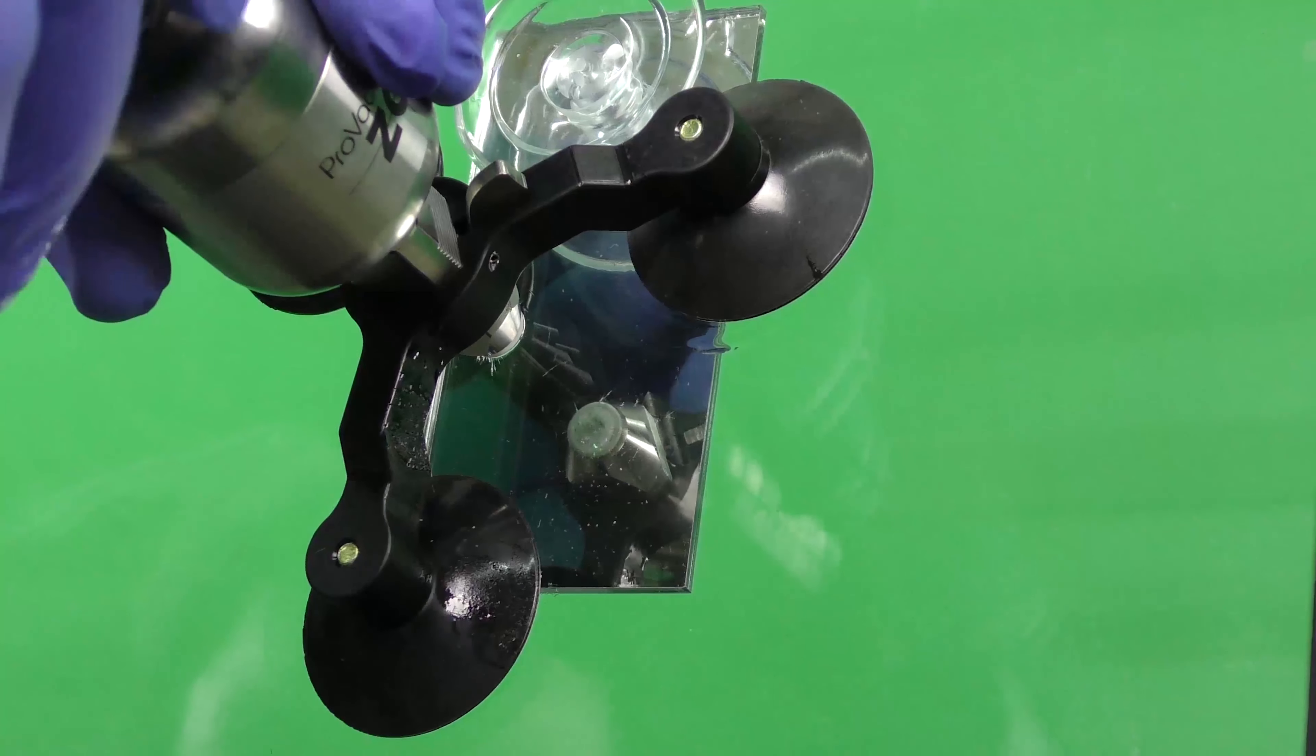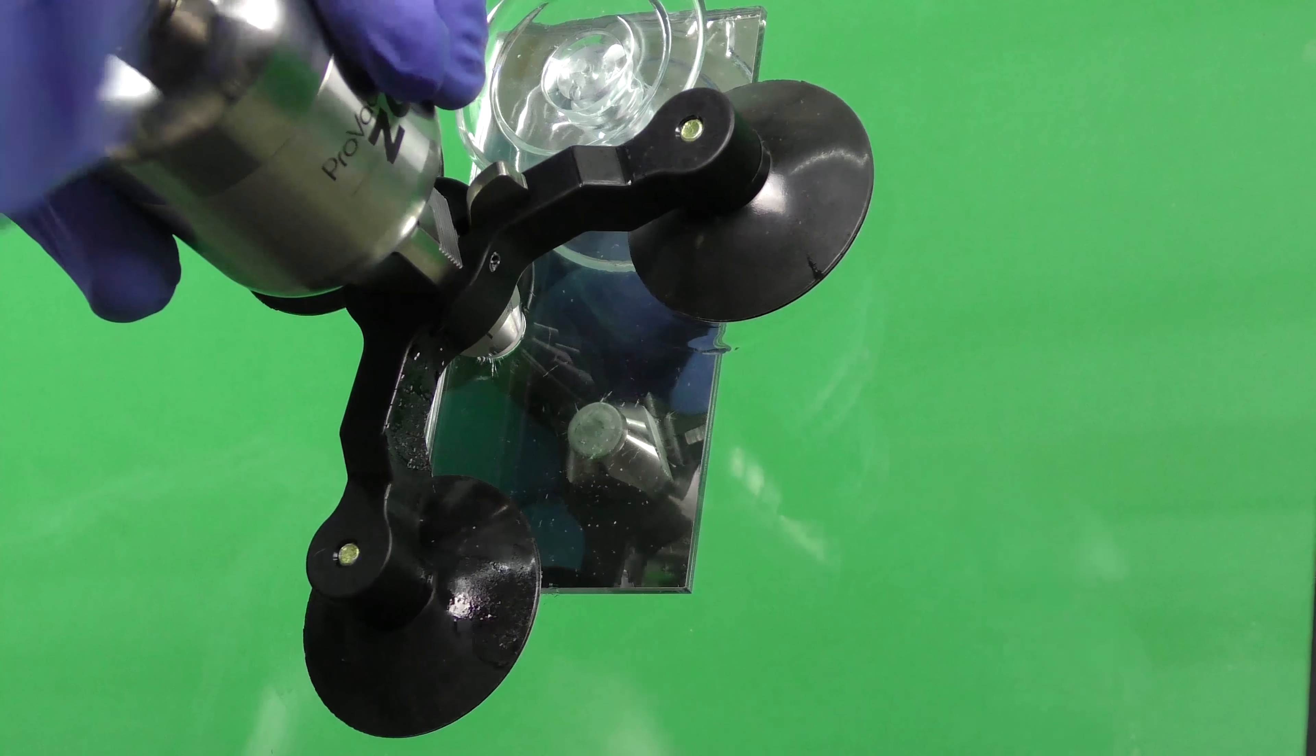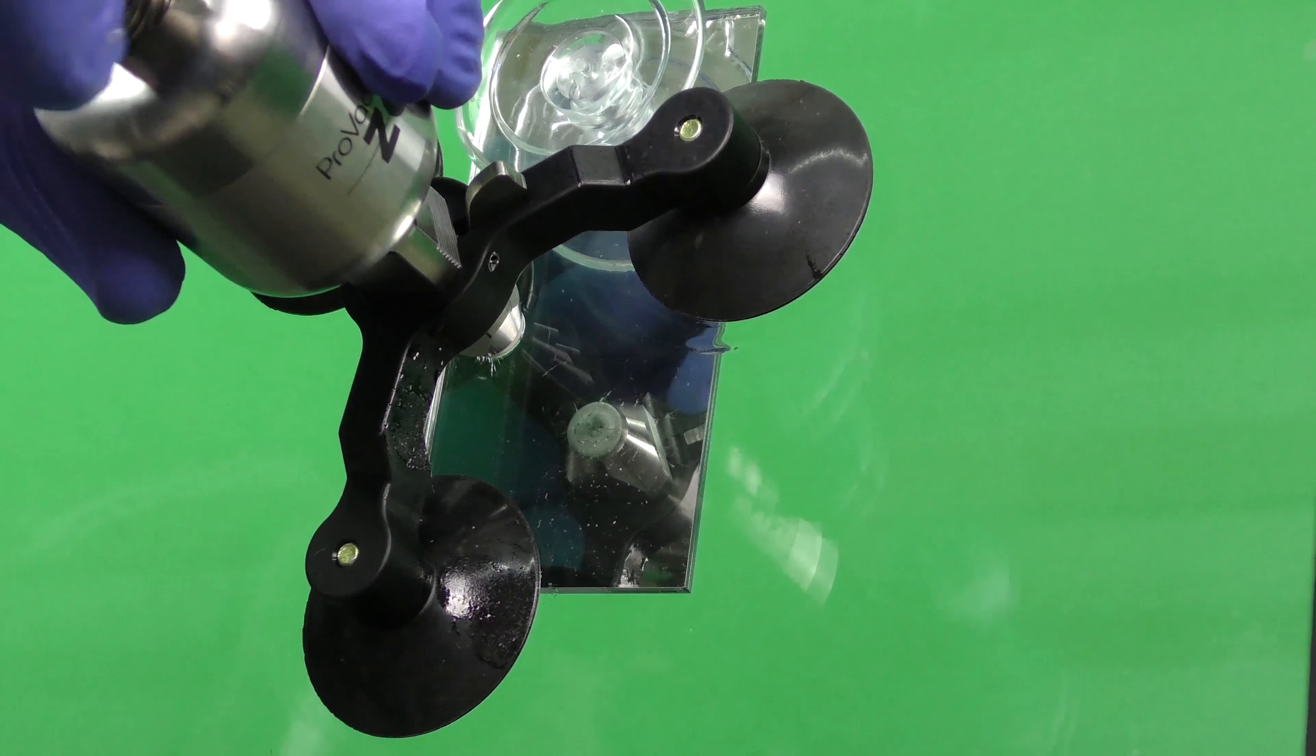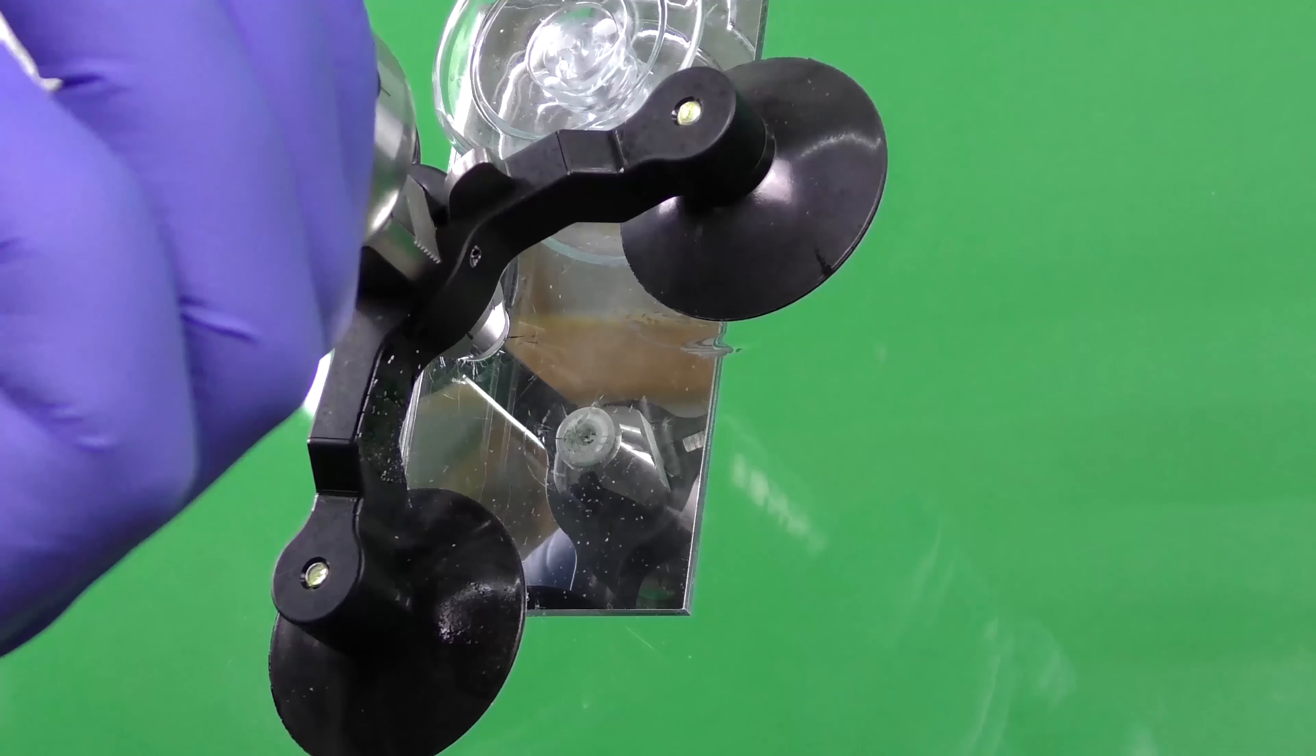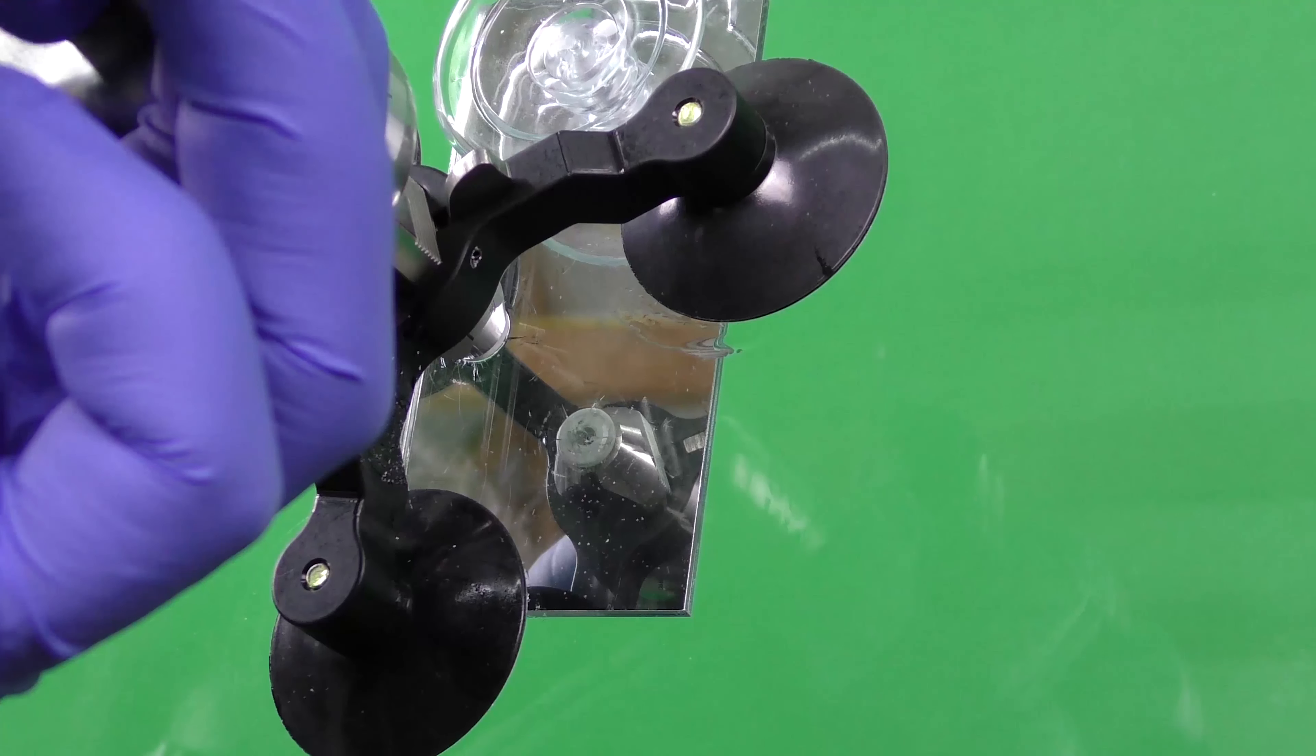Start the vacuum cycle by turning the piston all the way out. Leave it in the vacuum position for one to two minutes and then tighten the piston to perform the pressure cycle and leave it on the pressure cycle for one to two minutes. You'll need to repeat this process two times.